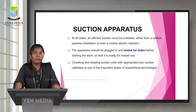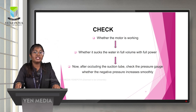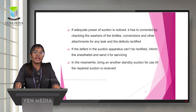Checking and keeping the suction unit with appropriate size suction catheters is one of the important duties of the Anesthesia Technologist. Check whether the motor is working and whether it suctions water at full volume and full power. After occluding the suction tube, check the pressure gauge to confirm that the negative pressure increases smoothly. If inadequate suction power is noticed, correct it by checking the washers of the bottles, connections, and other attachments for any leaks or defects.